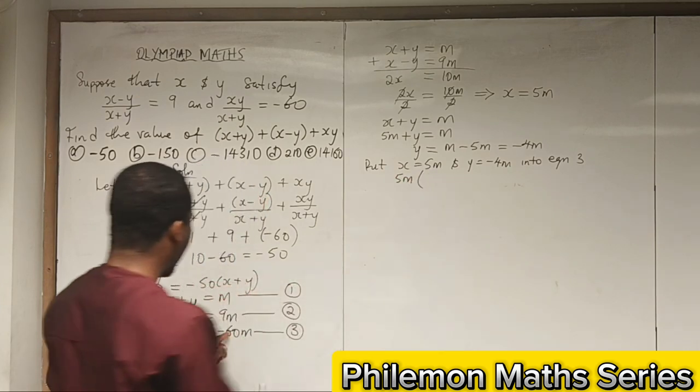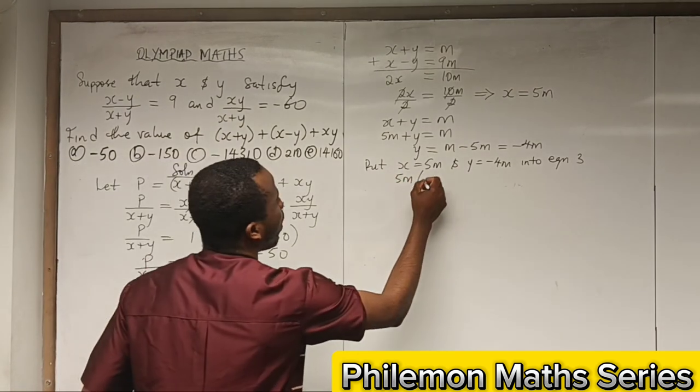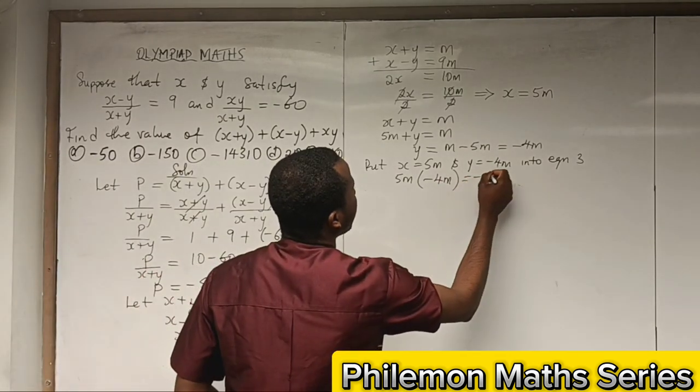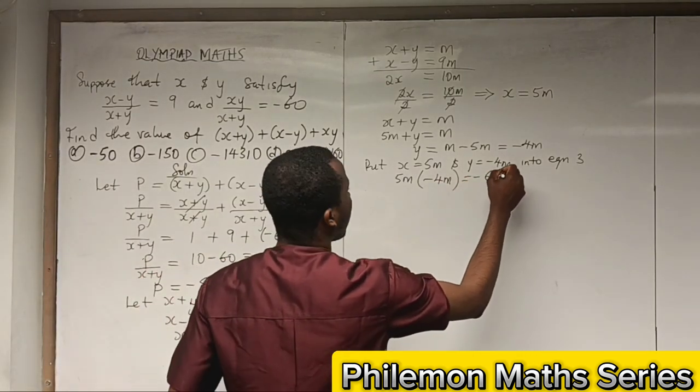We have 5m multiplied by y, which is -4m, to give -60m.